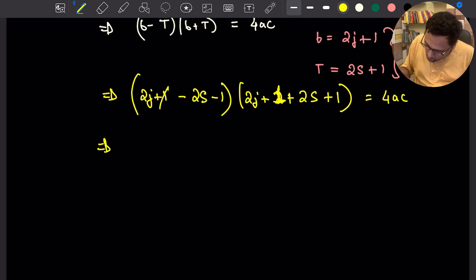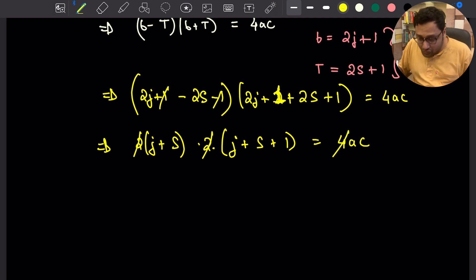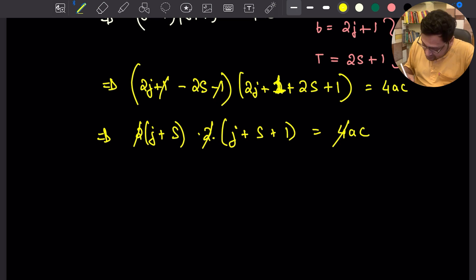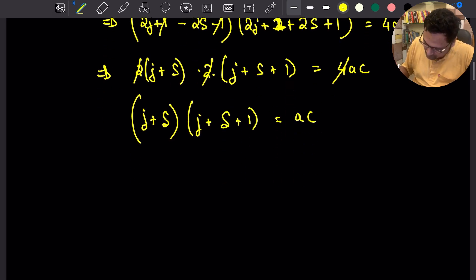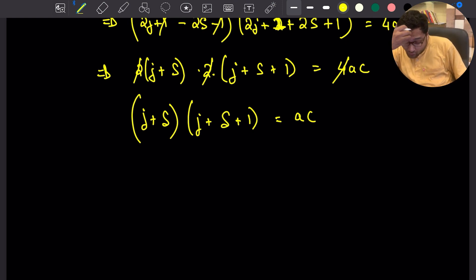What do we have here? 1 and minus 1 cancels. So we have 2 times J plus S times 2 times J plus S plus 1 equal to 4AC. You can now cancel this off. So you have J plus S times J plus S plus 1 equal to 2AC. Wait, equal to AC.